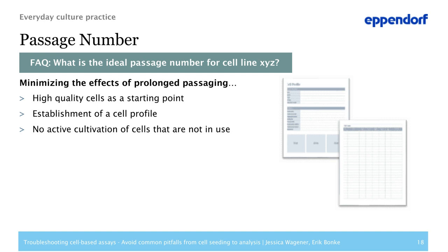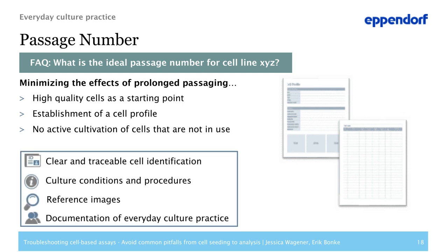In general, keep the passage number as low as possible. You must set a starting point as a reference to obtain reliable results. This starting point should be cells of high quality — ideally obtained from established cell banks, where you get well-documented, authenticated cell lines. A simple measure is to not keep cells in culture that are not actively used for experiments. Don't passage continuously, but rather establish new cells from frozen stocks if required. Establishing a cell profile with all required information is a good measure to keep an eye on unexpected changes that might hint at cellular senescence or over-passaging.